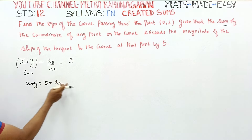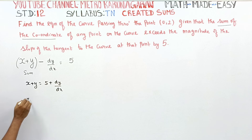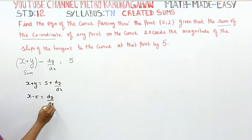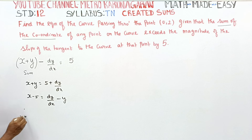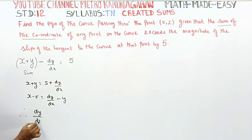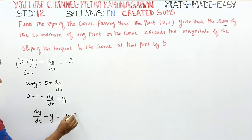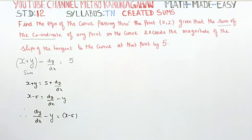So x plus y minus 5 is equal to dy/dx, which gives us the final differential equation: dy/dx minus y is equal to x minus 5. This is the final differential equation.